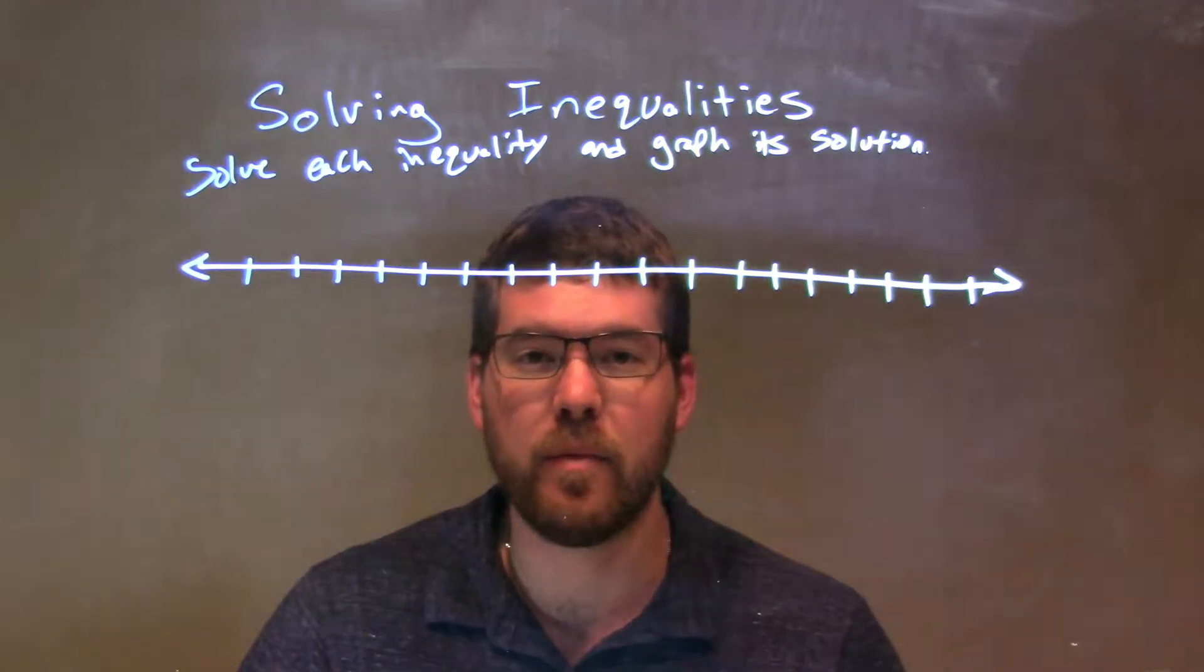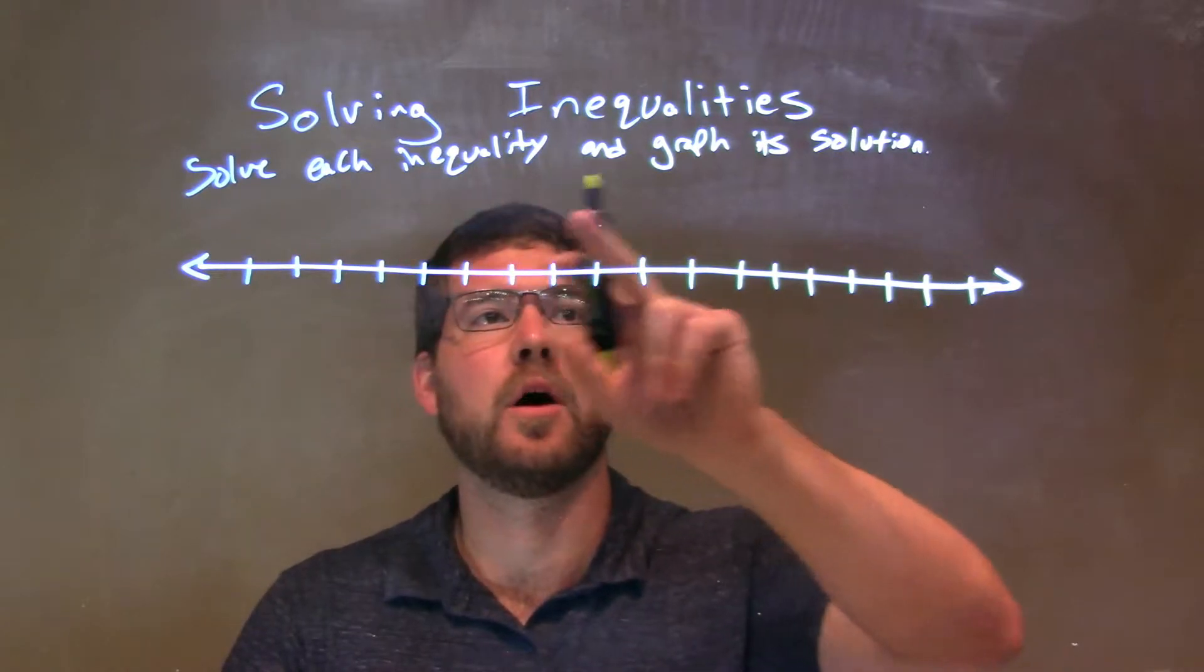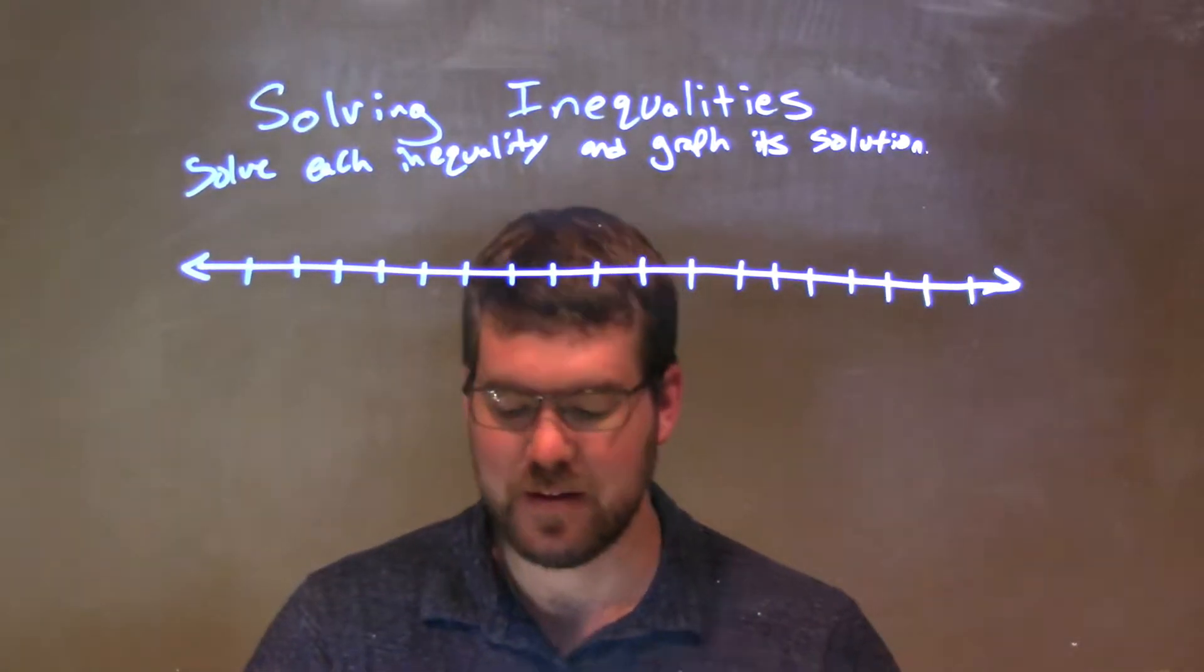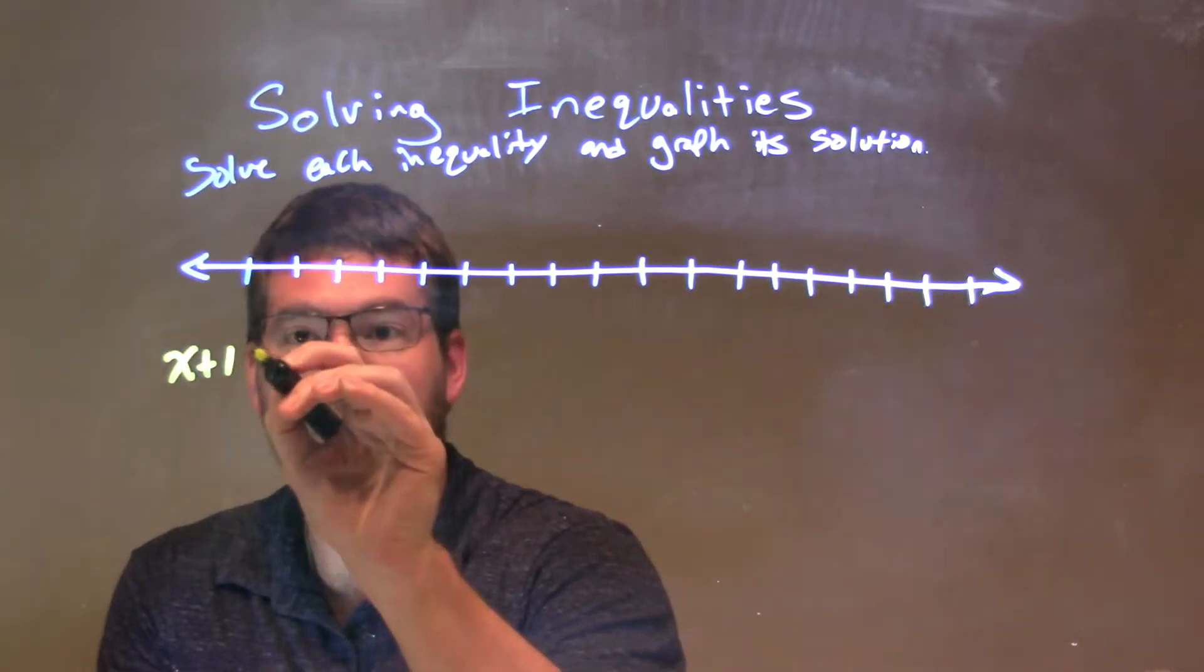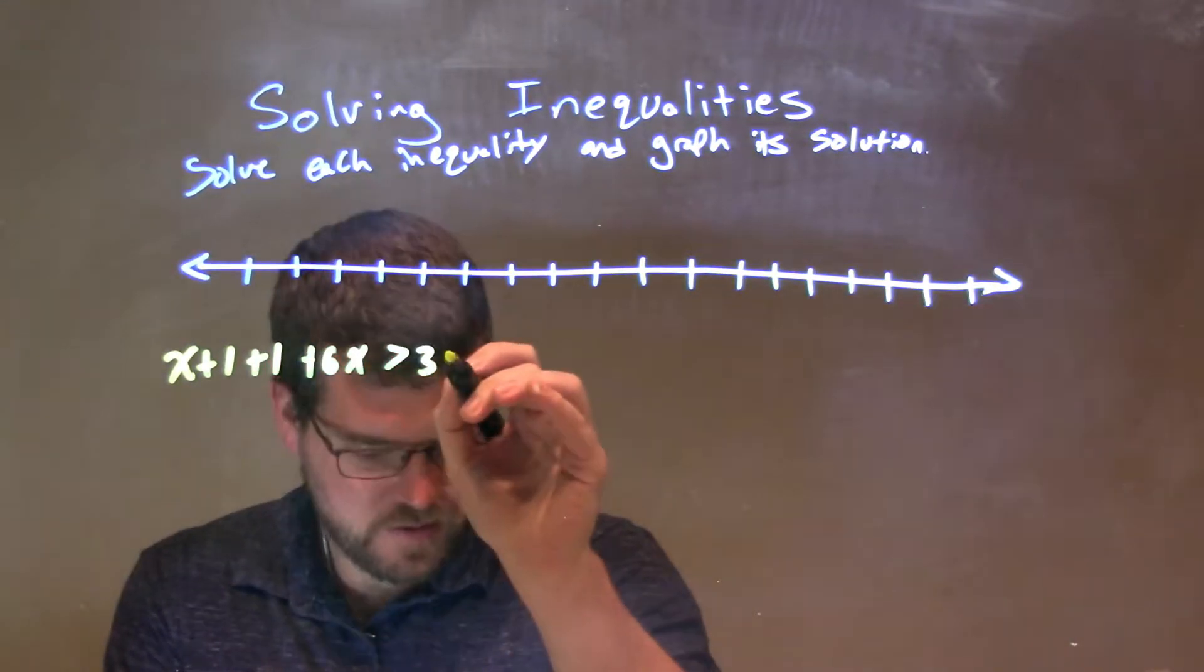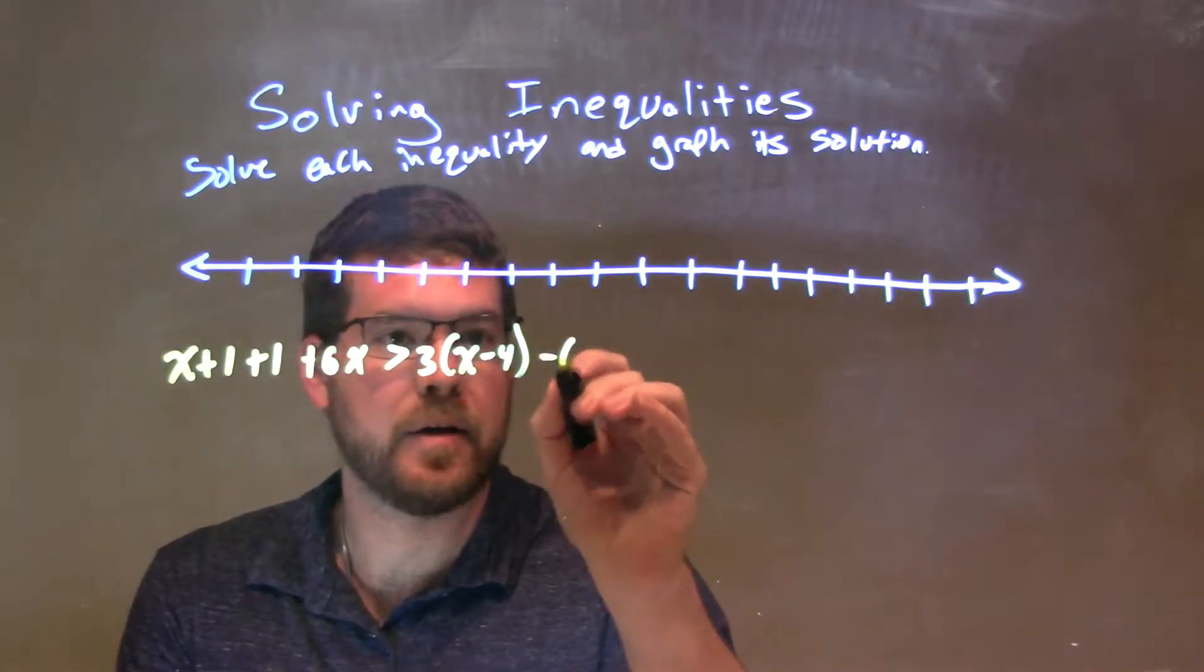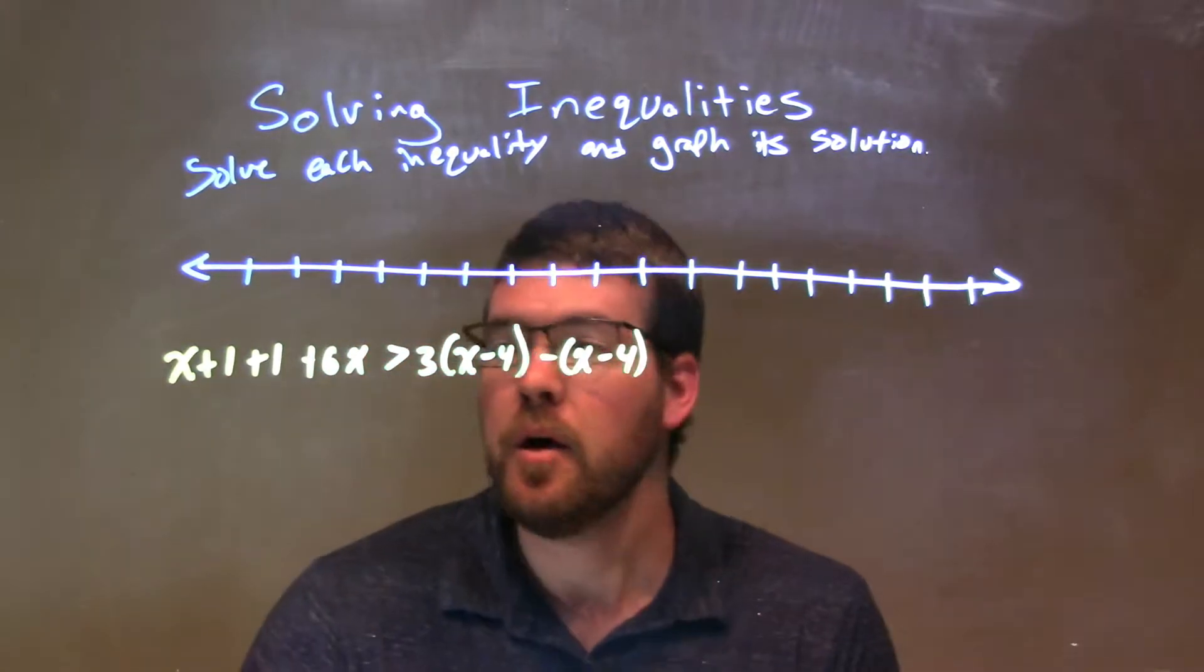Hi, I'm Sean Gannon, and this is MinuteMath, and today we're going to learn about solving inequalities. We'll solve each inequality and graph its solution. So, if I was given this inequality, x plus 1 plus 1 plus 6x is greater than 3 times x minus 4 minus x minus 4. Pretty long right there, right?